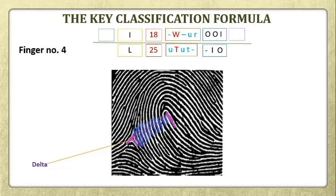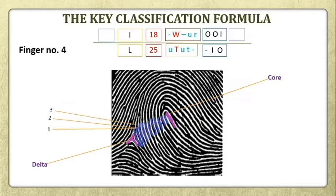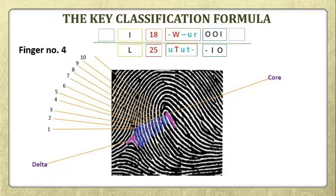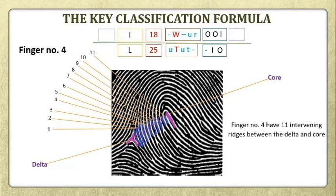First, we identified the delta and then we identified the core. After conducting the ridge count, it was found out that there are 11 intervening ridges between the delta and the core. So the answer is 11 for our key classification.